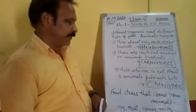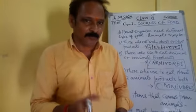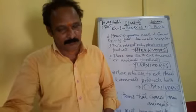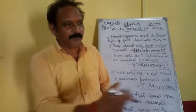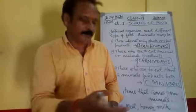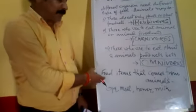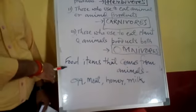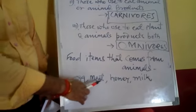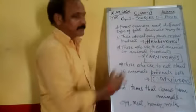Now, the heading of your book is that our food items, which we intake, can come from both sources. It may come from any plant source or from any animal source. For example, food items that come from animals include egg, flesh or meat, honey, milk, and fat.